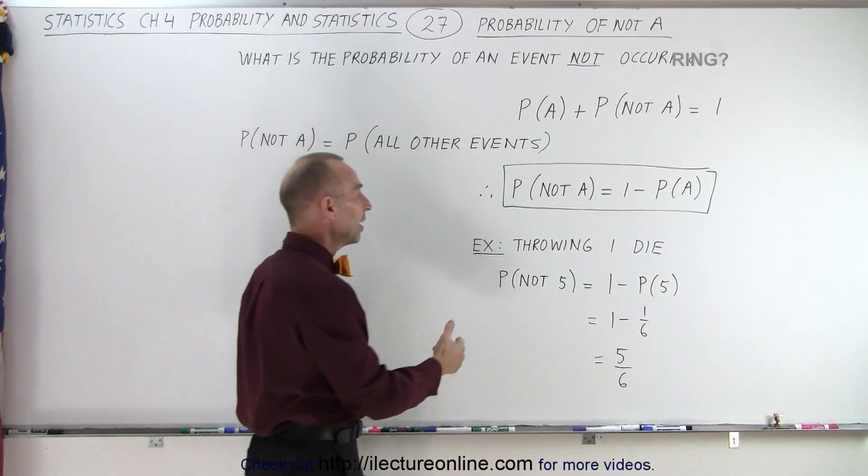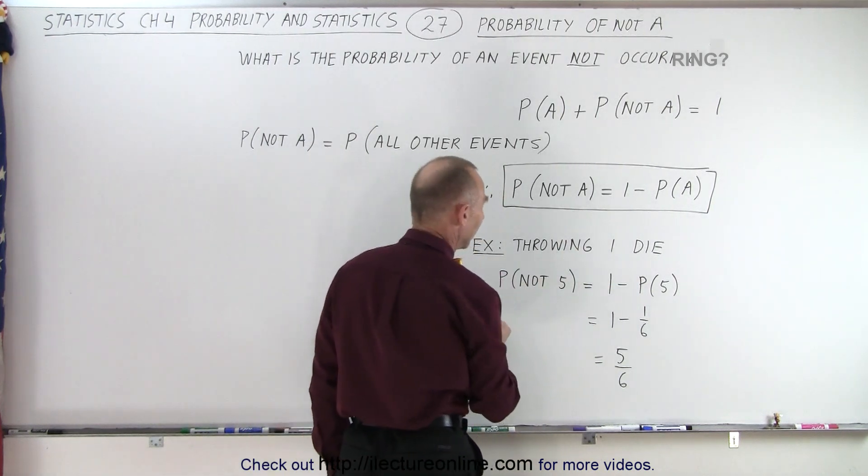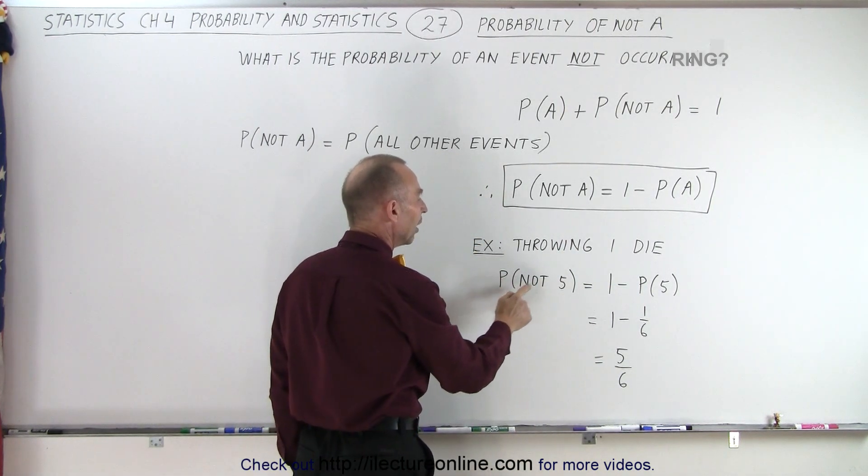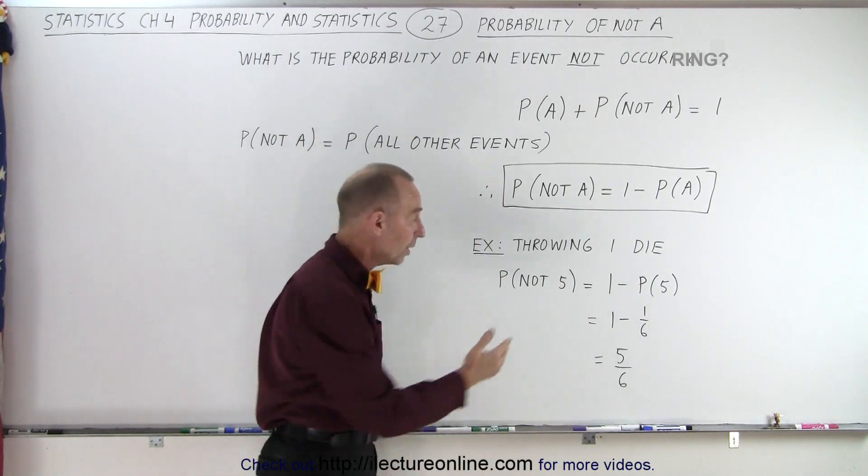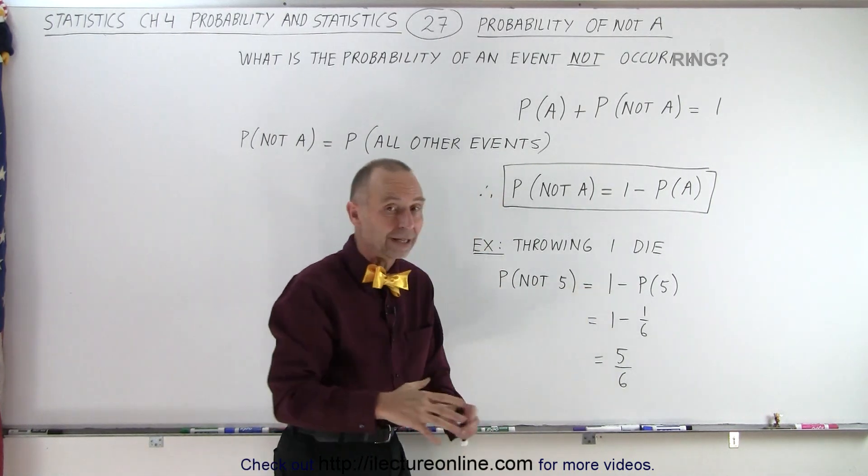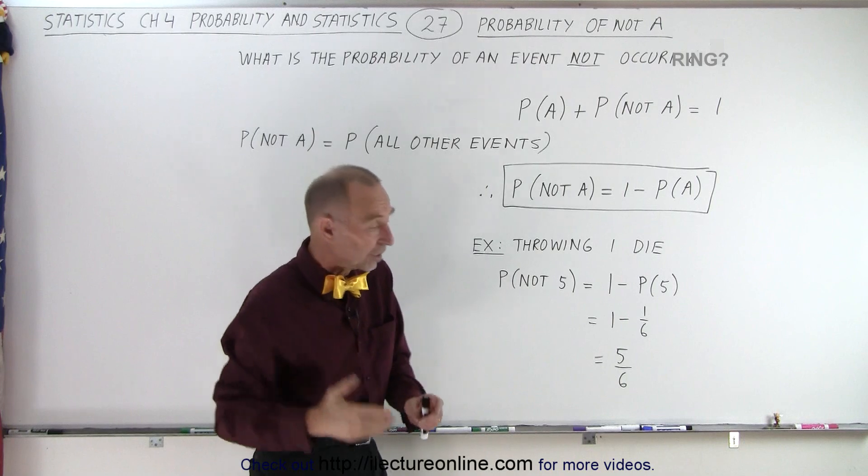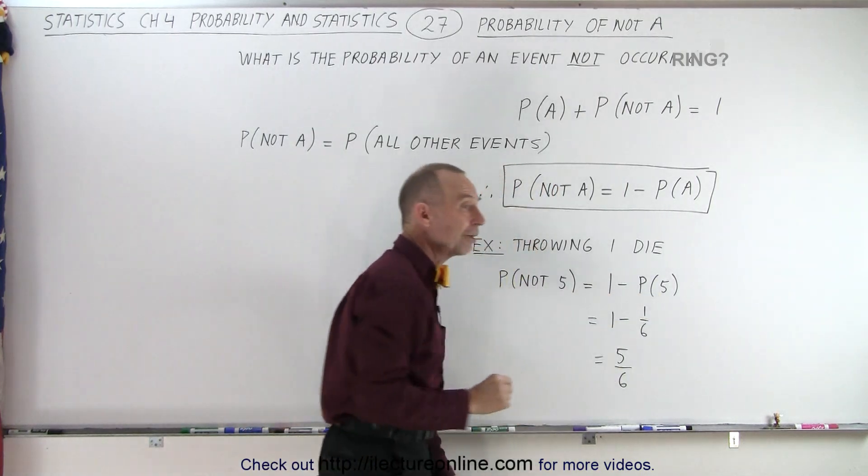For example, let's say we throw a single die, and we want to know the probability of not throwing a 5. Well, that is equal to 1, which represents the probability of all numbers, 1 through 6, minus the probability of throwing a 5.